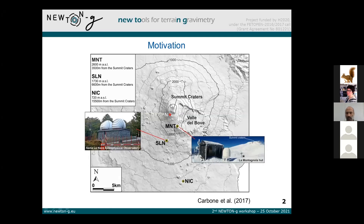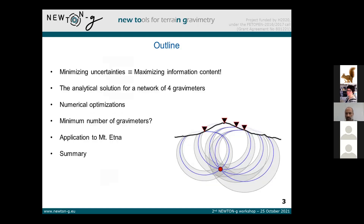How we can design the network such that we can get the most out of the data that this network can provide us with. The main task of this network is to minimize the uncertainties associated with the sources of mass change that we want to detect. This is equivalent to maximizing the information that we acquire about these sources.